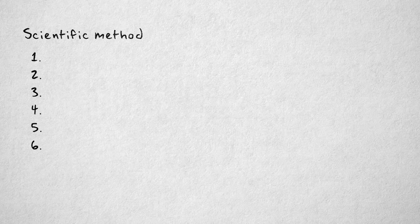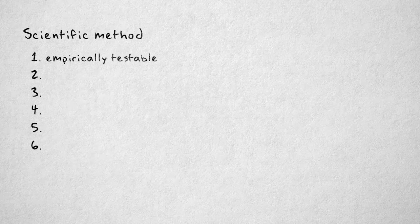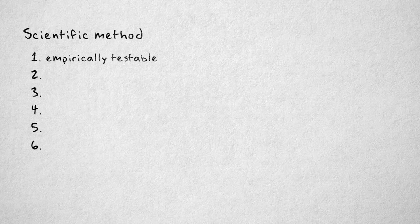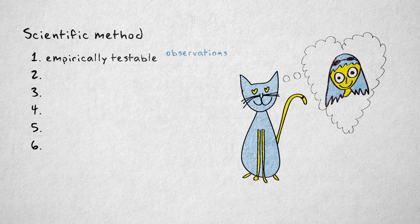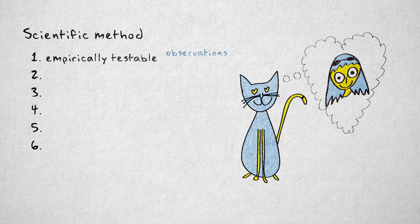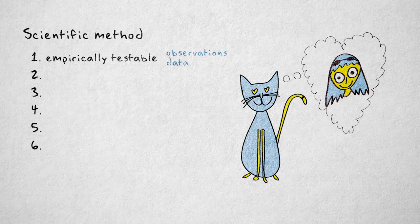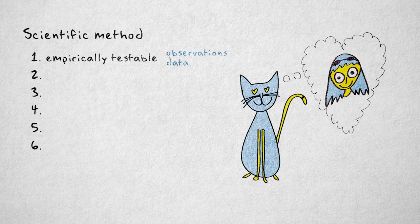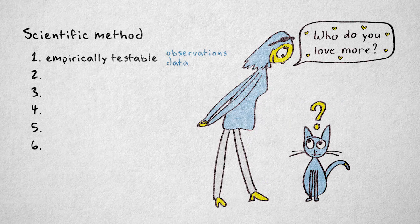The first principle requires that a hypothesis is empirically testable. This means that it should be possible to collect empirical or physical evidence or observations that will either support or contradict the hypothesis. Suppose I hypothesize that my cat loves me more than he loves my fiancé. To test this hypothesis empirically, we need to collect observations or data. But how can we observe how much the cat loves us?